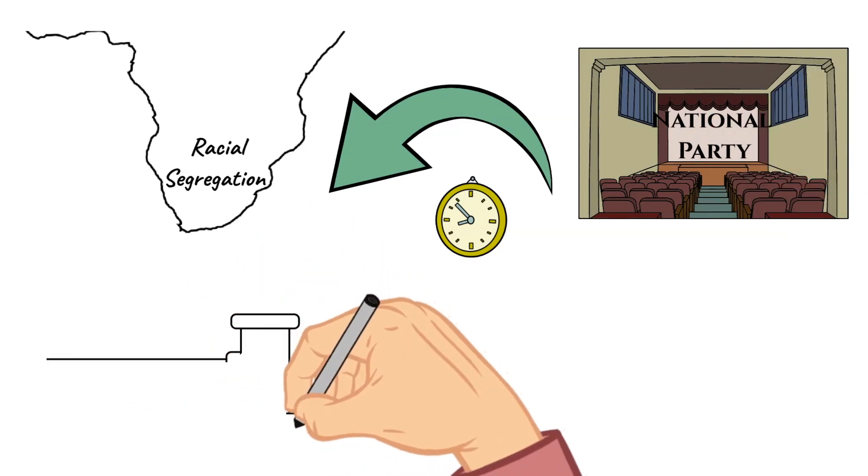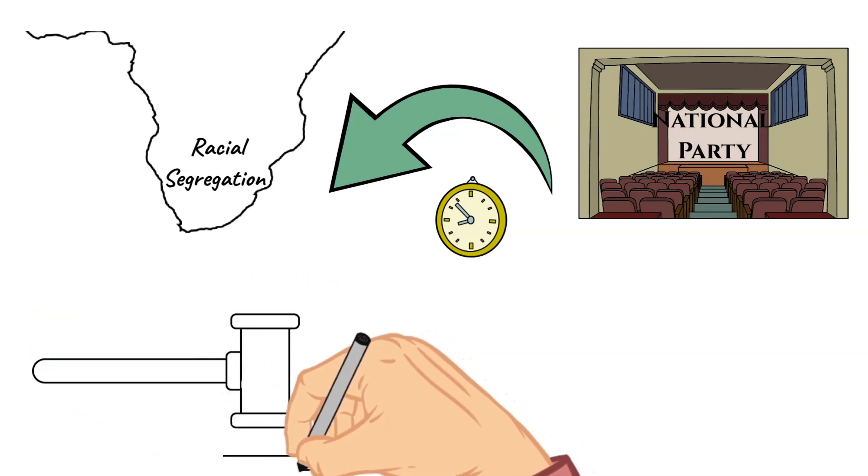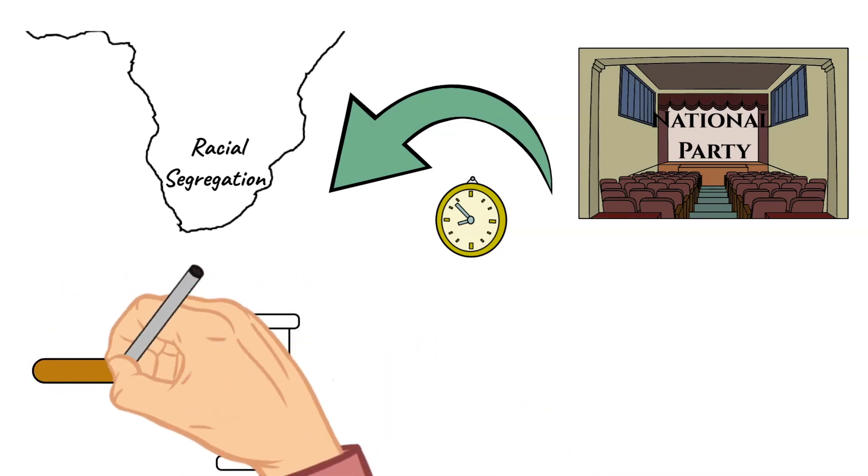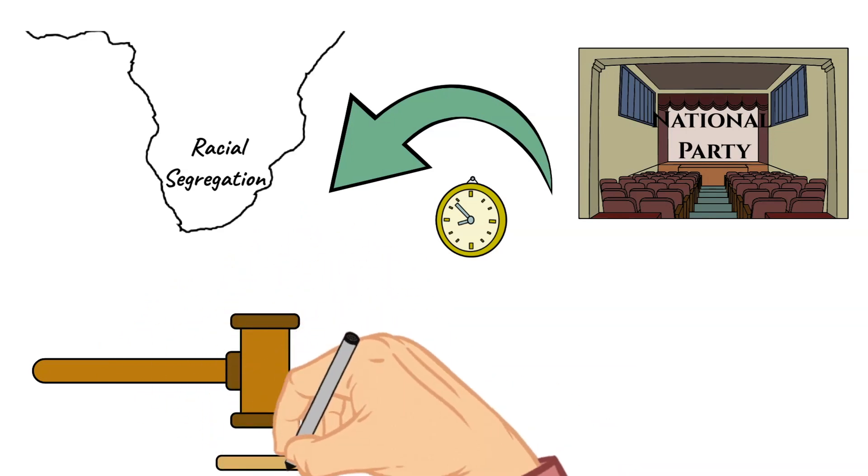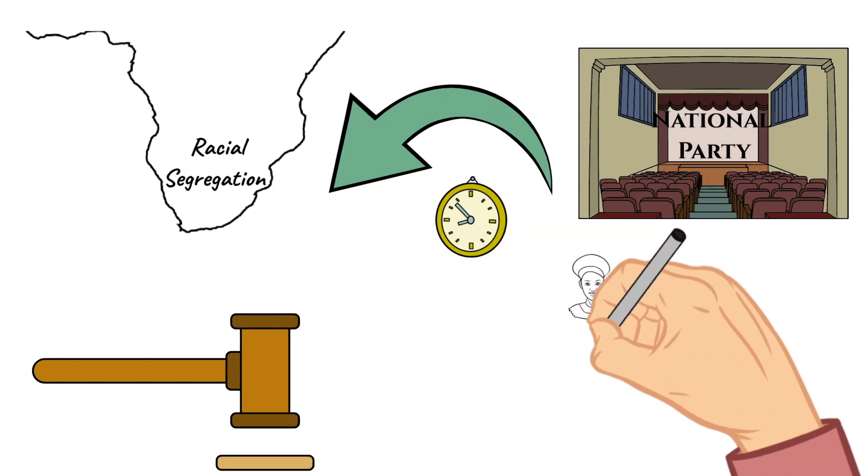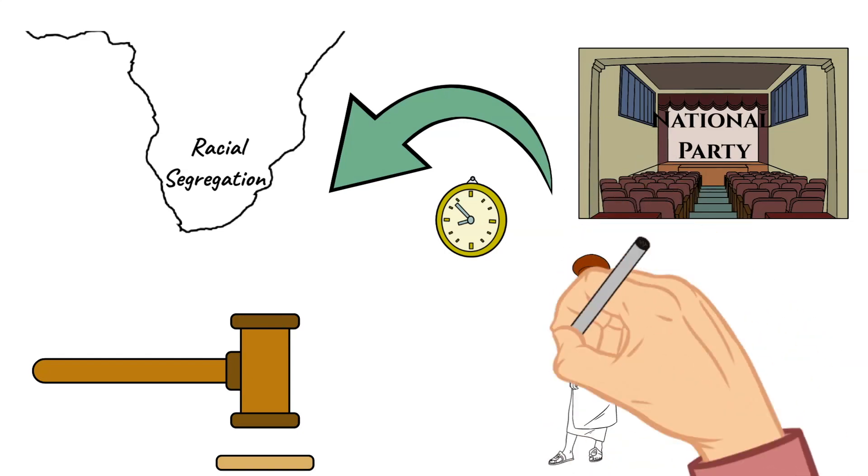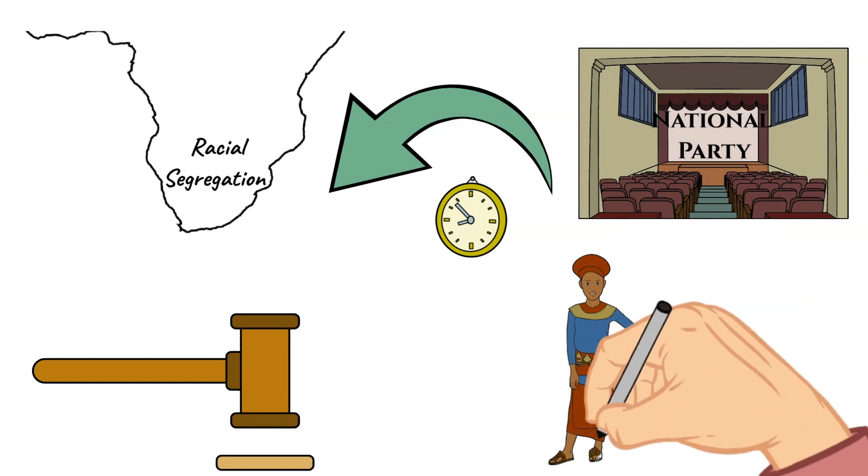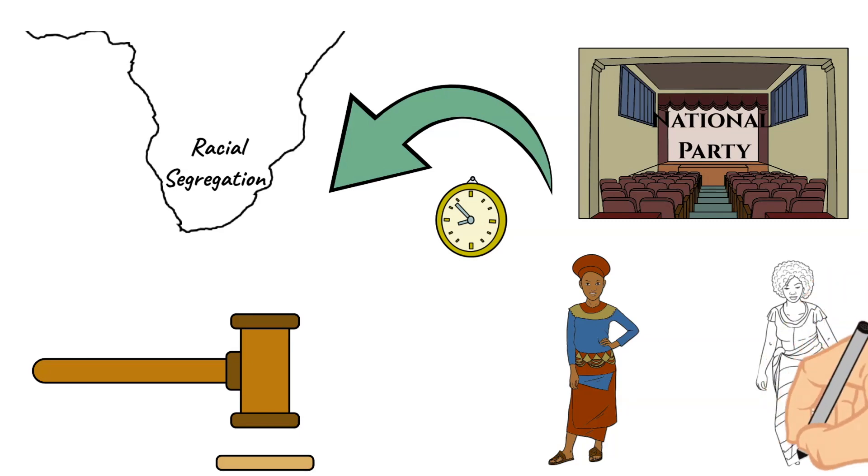This party consisted of an all-white government which then began enforcing existing policies of racial separation or segregation. Their goal was not only to separate South Africa's white citizens from its non-white citizens, but also to separate non-white citizens from each other and to divide the black South Africans along tribal lines in order to decrease overall their political power.